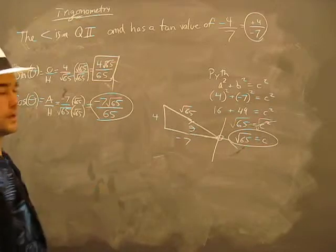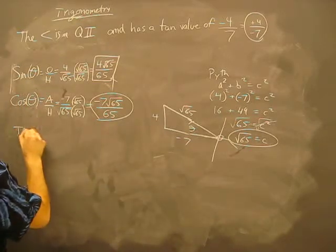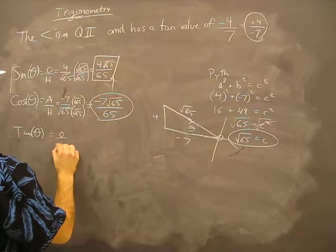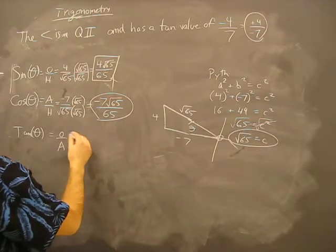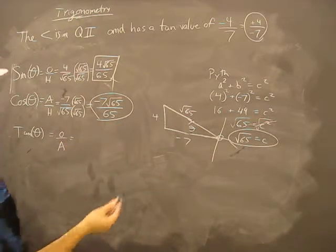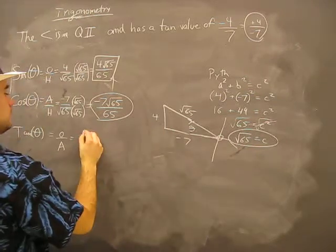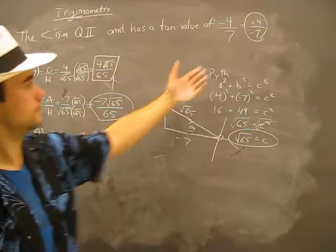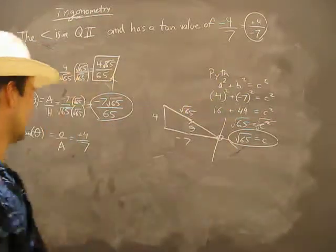That's my cosine. And tangent for the night is opposite over adjacent, which is 4 over negative 7. Well, that was given to us.